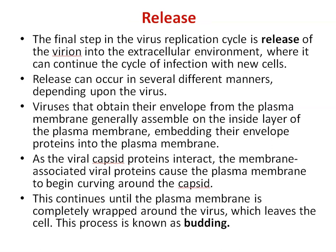The final step is release. The final step in the virus replication cycle is release of virions into the extracellular environment, where they can continue the cycle of infection with new cells. Release can occur in several different manners depending upon the virus. Viruses can obtain their envelope from the plasma membrane, generally assembled on the inside layer, embedding their envelope proteins into it. As viral capsid proteins interact, membrane-associated viral proteins cause the plasma membrane to begin curving around the capsid, continuing until the plasma membrane is completely wrapped around the virus, which then leaves the cell. This process is known as budding.